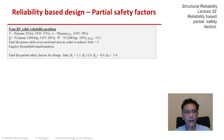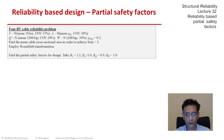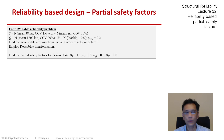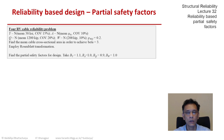Let's take up a four random variable problem and derive the partial safety factors for the corresponding design situation. It is the same cable reliability problem that we have been looking at in various different ways throughout this course. Here we have the yield strength, the cross-sectional area, the load Q and the load W being the four random variables. We can think of Q as the live load and W as the dead load, and there is a little bit of dependence between Q and W.